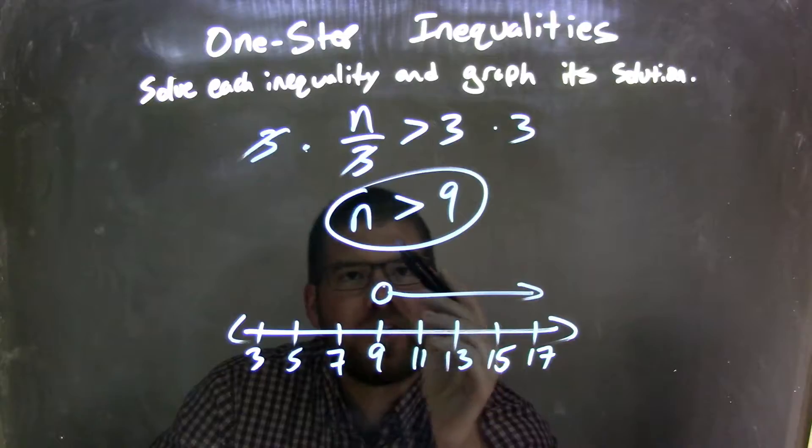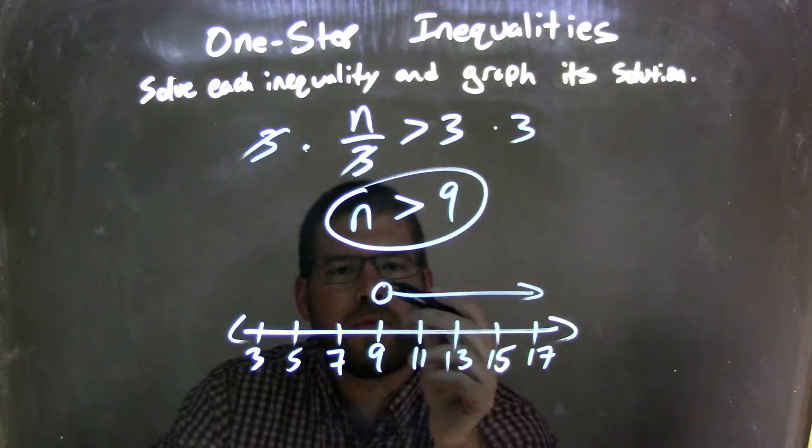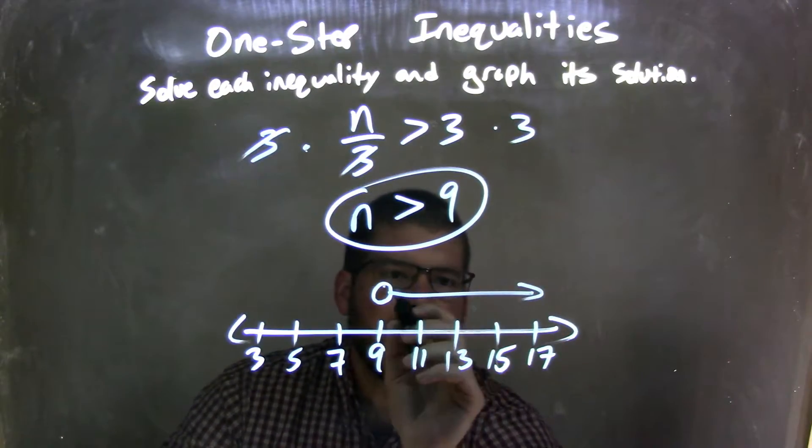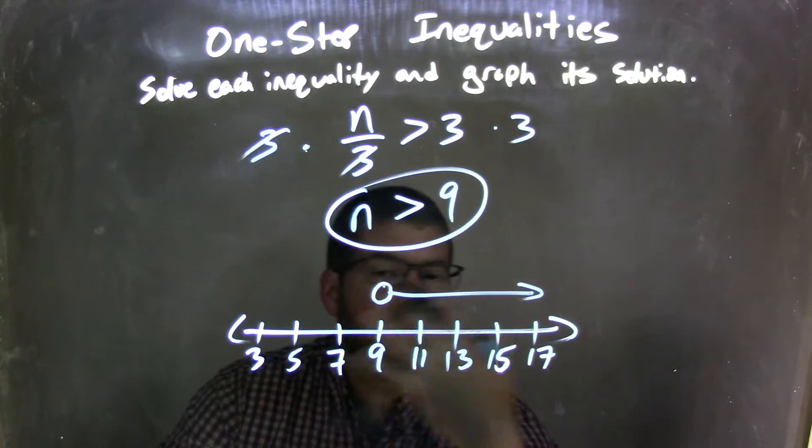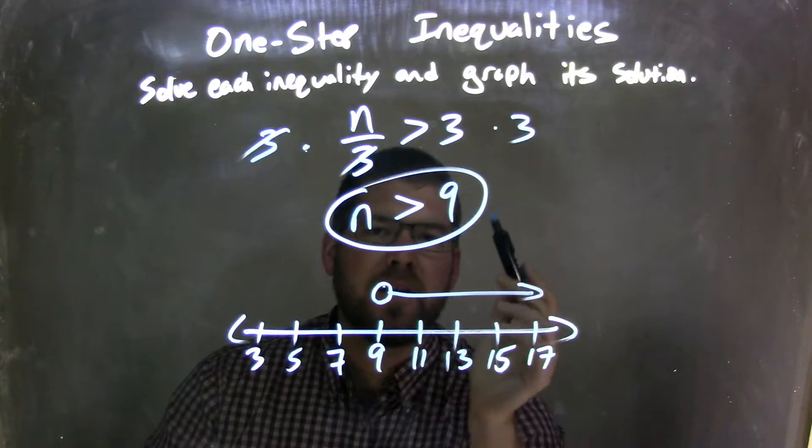So I have an open circle here, not a closed one, because it's not equal to 9, it's just greater than 9. And then the arrow goes to the right, because n is greater than 9, so it goes to the right to the values that are greater than 9. And so this graph matches my final answer, which is n is greater than 9.